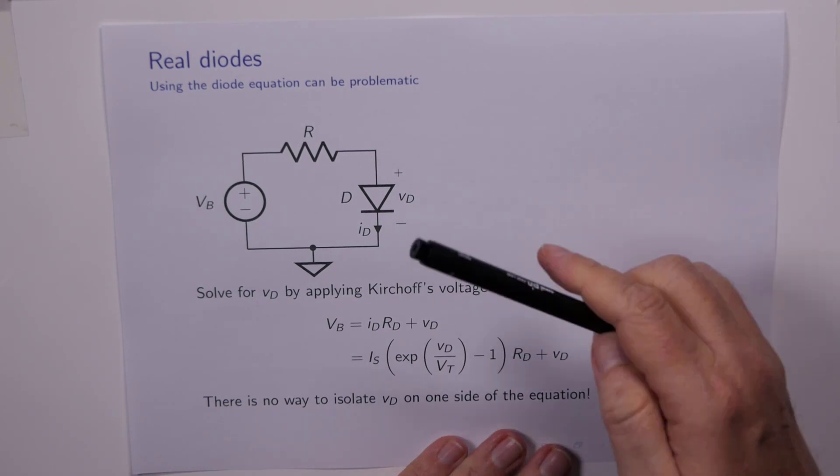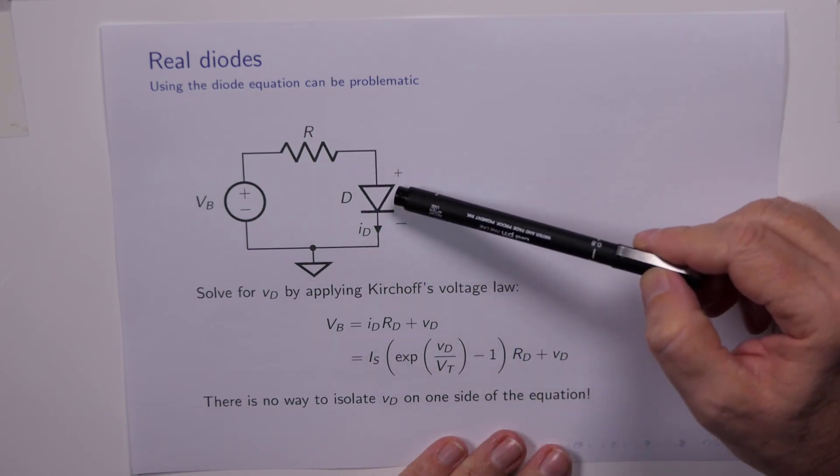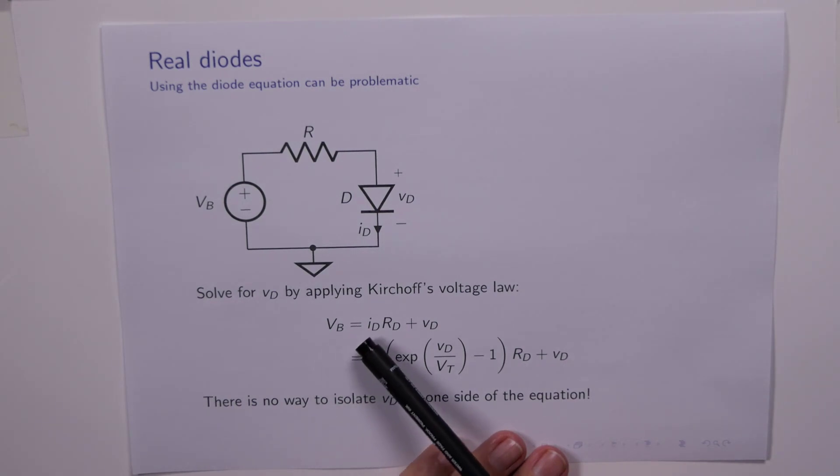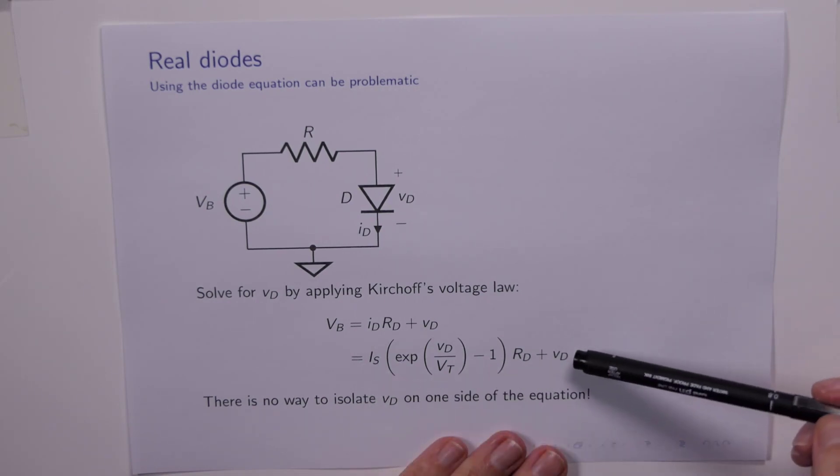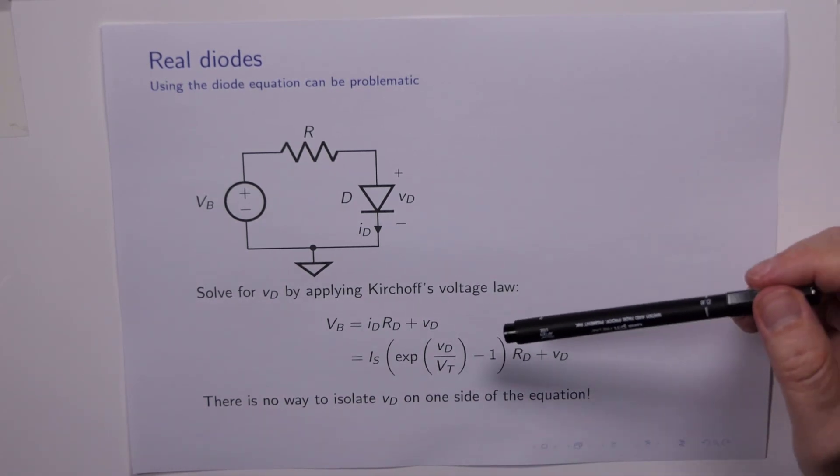So here's an example of where we might do this. Here's our simple circuit: battery, resistor, diode. We can apply Kirchhoff's voltage law. Vb, the applied voltage, is equal to Id times Rd plus the voltage across the diode. Well, Id is given by the diode equation, so we substitute that. But if we now need to solve this equation for Vd, we can't do it. There's simply no way to rearrange this equation to get Vd on one side and all the other symbols on the other.